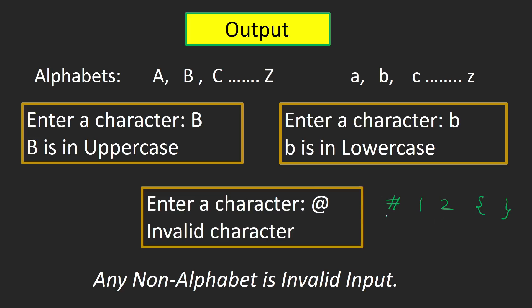If we enter any other character other than alphabets, like hash, any digit, or curly brackets, we should get 'invalid character', because these characters are not in uppercase or lowercase. Our program should handle both valid and invalid cases.